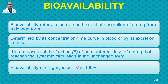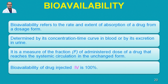Bioavailability describes how much quantity of the drug is available for biological action, determined by its concentration-time curve in blood or excretion in urine. It is a measure of the fraction of the administered dose that reaches systemic circulation in unchanged form, before being converted to metabolites or excreted.